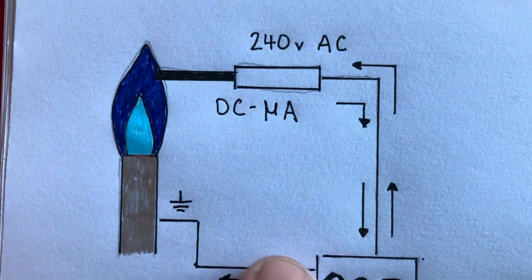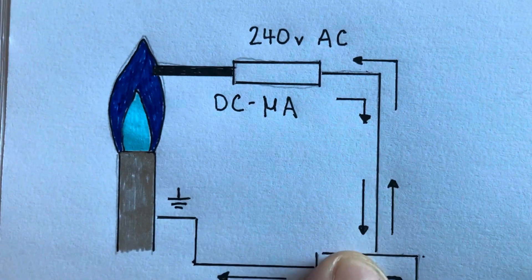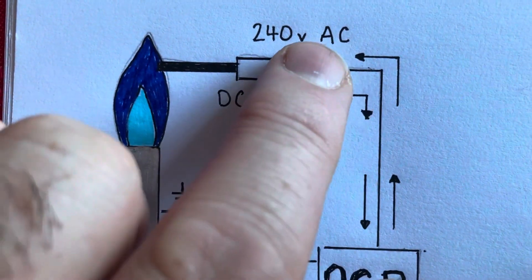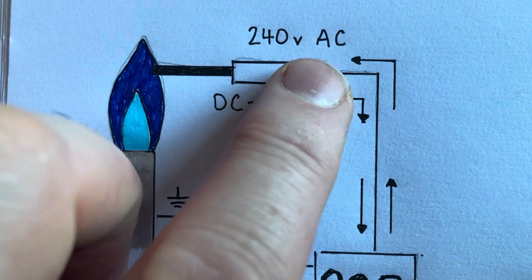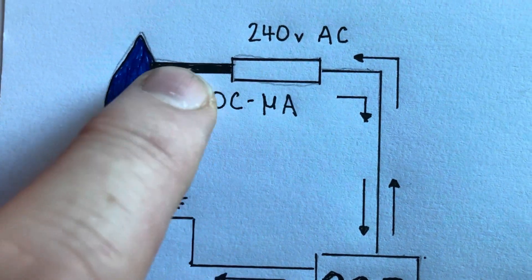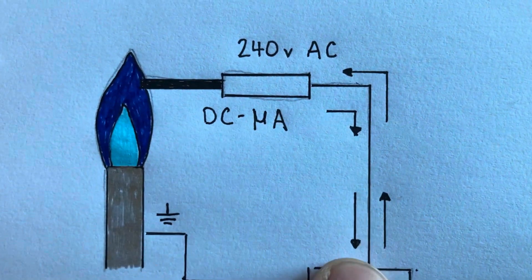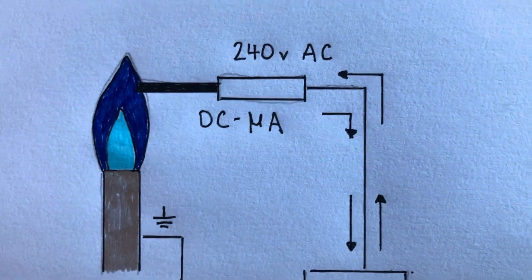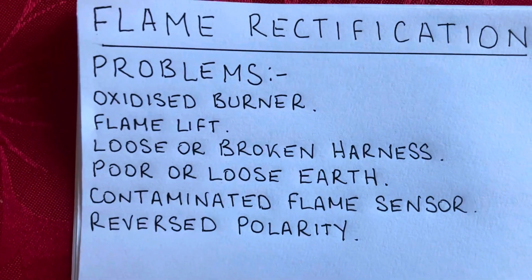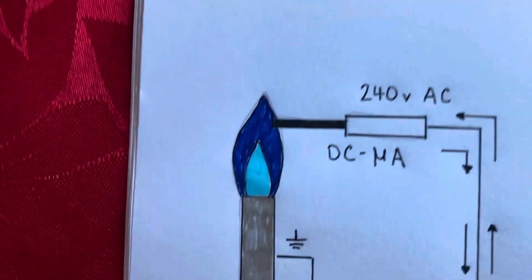A loose or broken wiring harness can also be a problem — you could have a break in it or a poor connection. You want to test continuity on the harness and make sure you've got less than one ohm between the harness and the connection, and test the probe as well. You need a good connection all the way back to the circuit board.